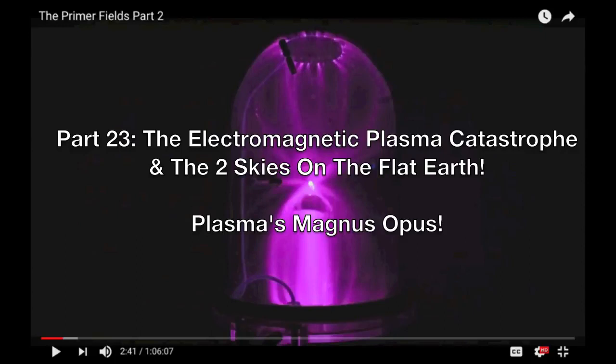Part 23: The Electromagnetic Plasma Catastrophe and the Two Skies on the Flat Earth. Plasma's Magnus Opus.